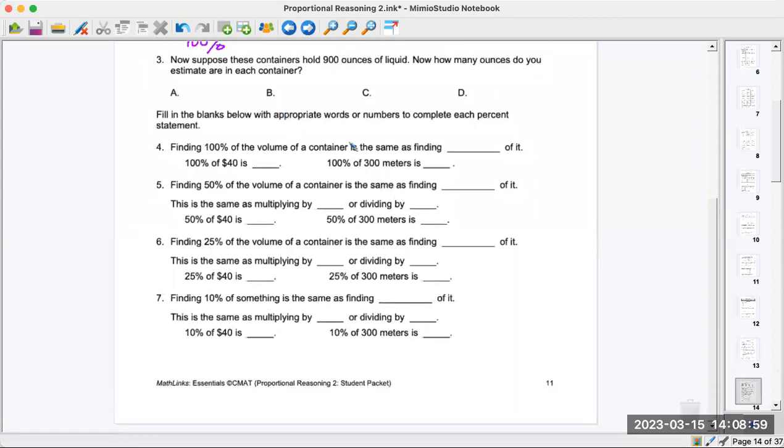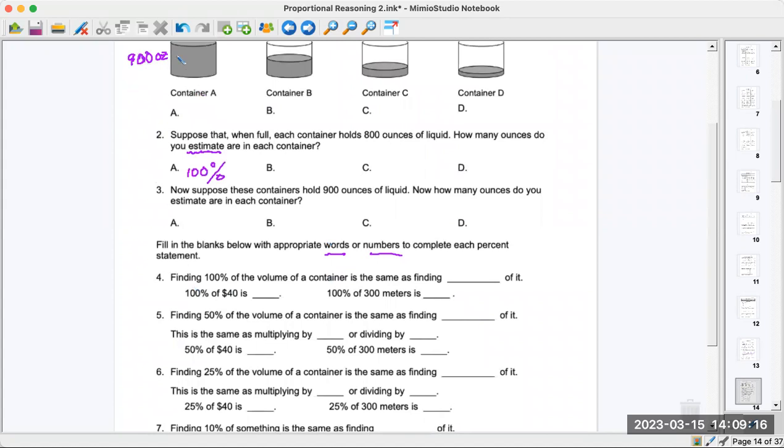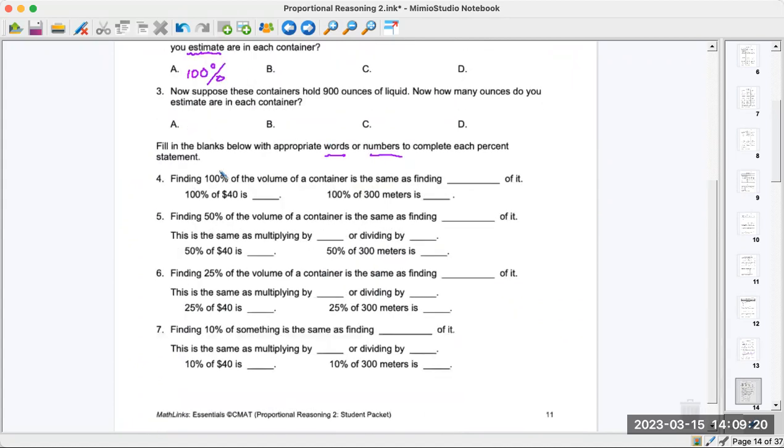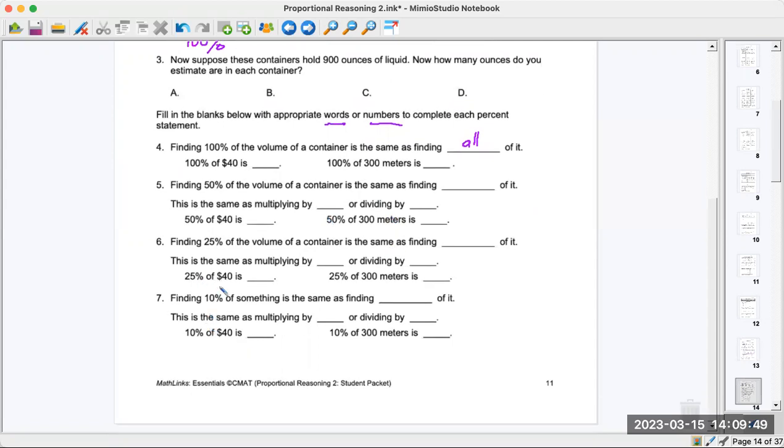Fill in the blanks below with appropriate words or numbers to complete each percent statement. Finding 100% of the volume of a container - volume is how much it holds, so it holds the volume here is 900 ounces. Finding 100% of the volume of a container is the same as finding what do you think? What's the word? I'm going to insert all for you: all of it. And then you guys fill in the rest.